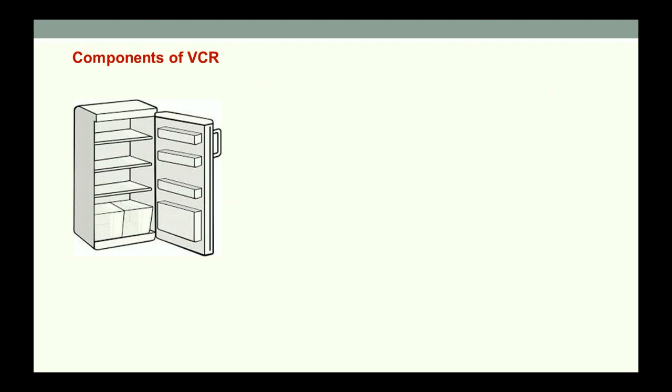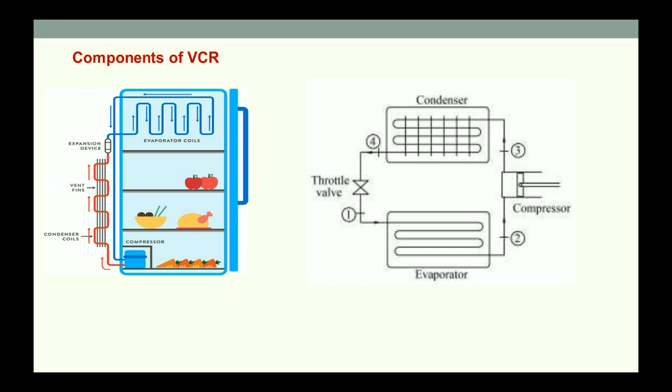Let's look at the components of VCR, vapor compression refrigeration system. This is a domestic refrigerator. These are the major components of vapor compression refrigeration system: throttle valve, evaporator, compressor, and condenser. You can look at the arrangement of these components in a domestic refrigeration system.